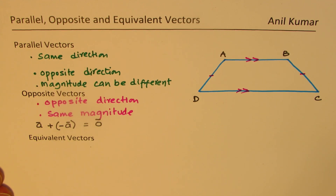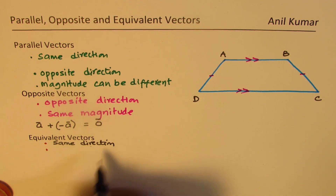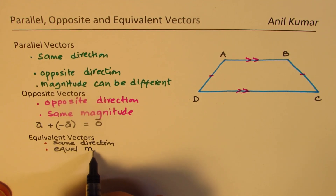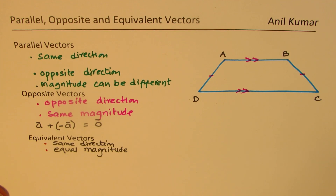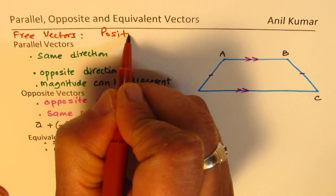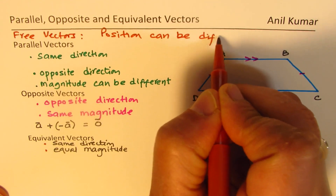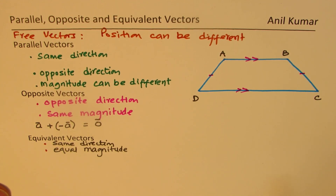What are equivalent vectors? For equivalent vectors, it is important to understand that they have same direction and same magnitude. But the position can be different. When we talk about vectors, they are free vectors — they could have any position. Two important things are magnitude and direction, and that is how we should be linking them.